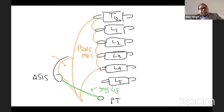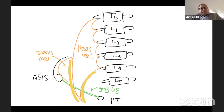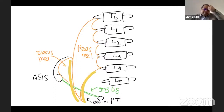The iliopsoas muscle inserts into the lesser trochanter. Coming on the lateral side is the femoral nerve — it goes behind the inguinal ligament. On the medial side is the obturator nerve. So, obturator on the medial side and femoral on the lateral side.